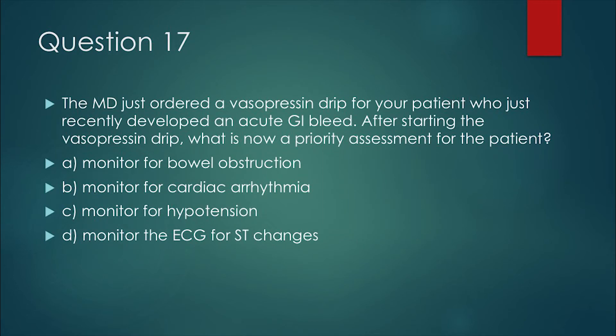Question 17. The medical doctor just ordered a vasopressin drip for your patient who just recently developed an acute GI bleed. After starting the vasopressin drip, what is now a priority assessment for your patient? A. Monitor for bowel obstruction. B. Monitor for a cardiac arrhythmia. C. Monitor the patient for hypotension. Or D. Monitor the ECG for ST changes.